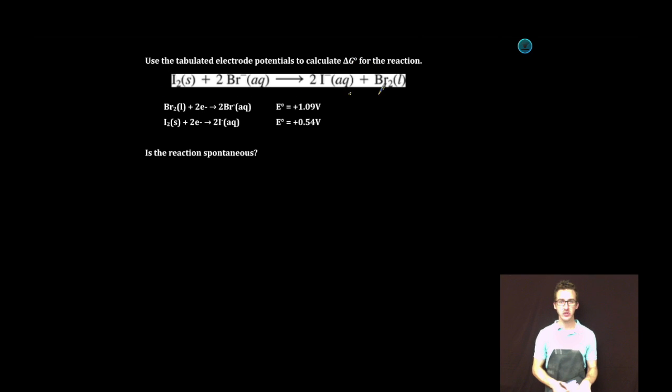As we take a look at our equation, notice that it's the iodine that's being reduced, the iodine that matches the reduction half reaction provided. And it's the bromine that we need to reverse or flip, because in the equation, it is being oxidized.